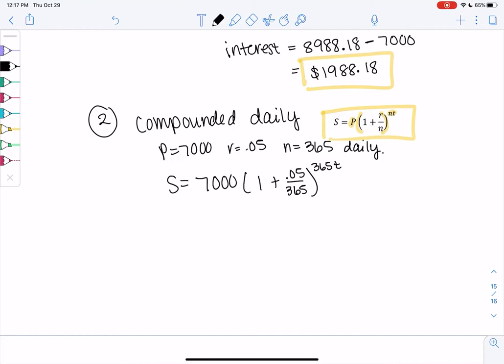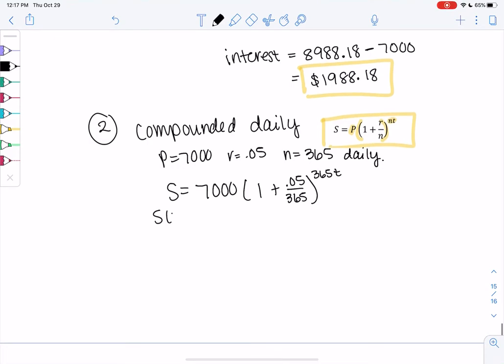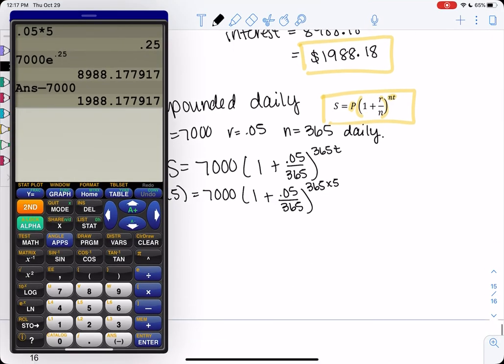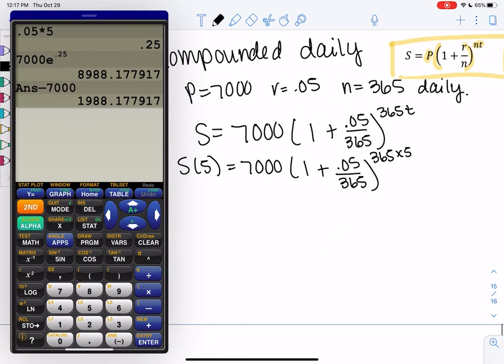So let's see what happens five years later. So 7,000, 1 plus 0.05 over 365, to the 365 times 5. So depending on your calculator, maybe you type it all at once. If not, let's find the power.